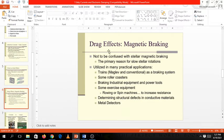So these drag effects are very important, especially in maglev, the eddy currents, because they make use of magnetic braking. So not to be confused with stellar magnetic braking, the primary reason for slow stellar rotations. So this is utilized in many practical applications. What I've said last meeting, trains, the maglev as a braking system. They make use of your eddy currents that produce your drag. So you might be wondering, how does a maglev slow down? It's because of eddy currents by producing an opposing magnetic field.